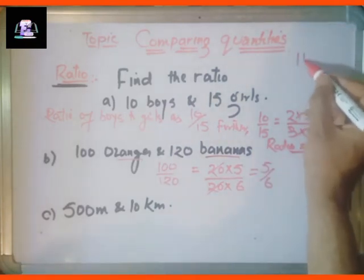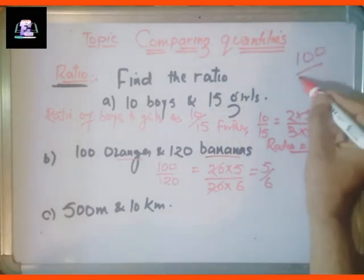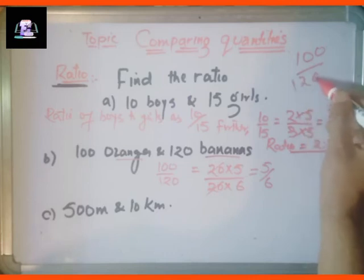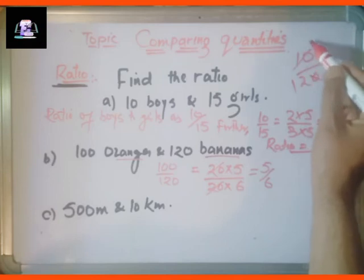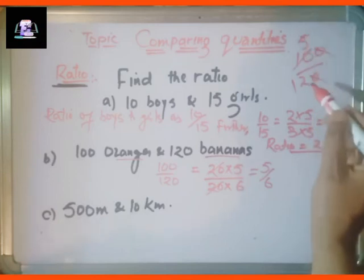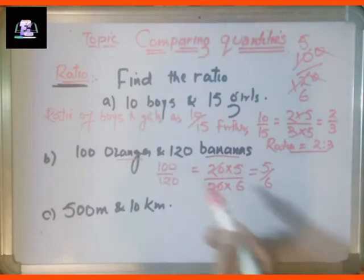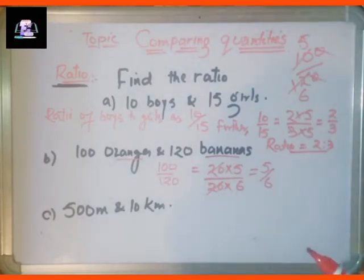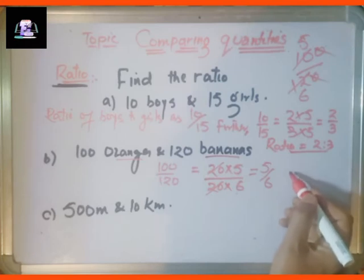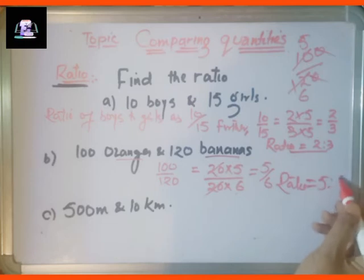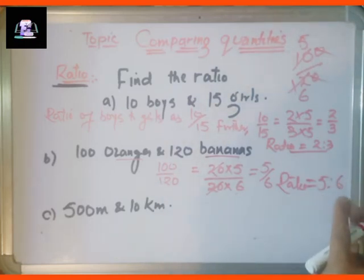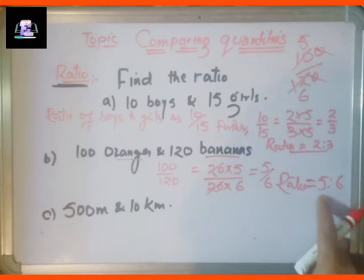Simply, we reduce 100 and 120: canceling the common factor of 20, five twenties are 100 and six twenties are 120, so the ratio is equal to 5 is to 6. The ratio of oranges to bananas is 5 is to 6.